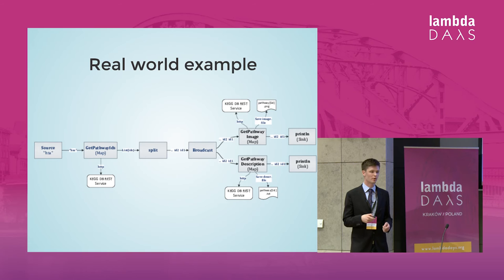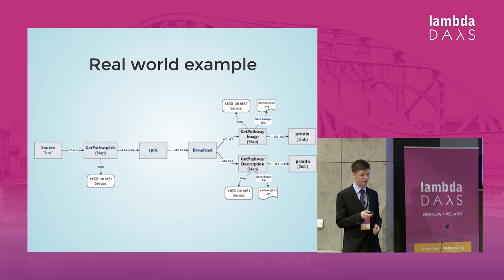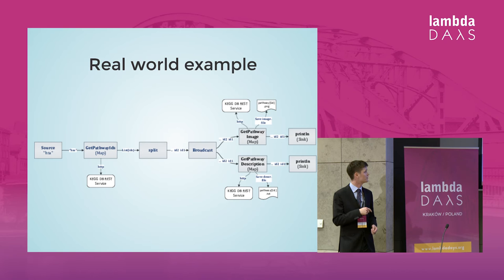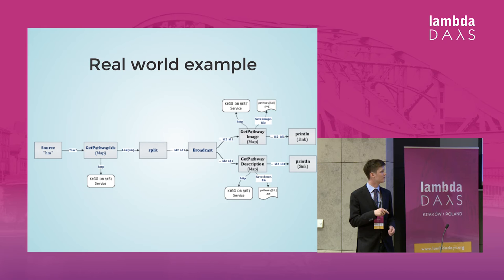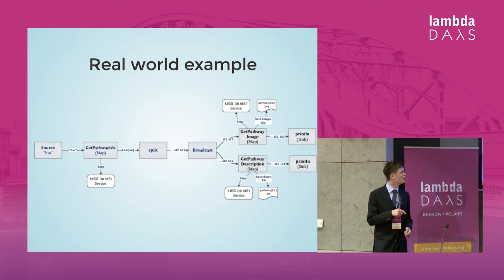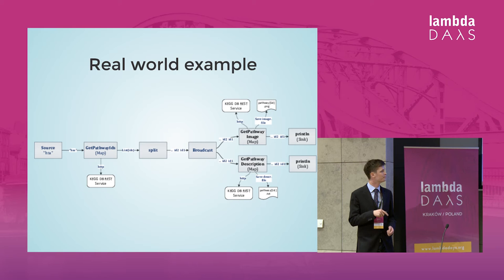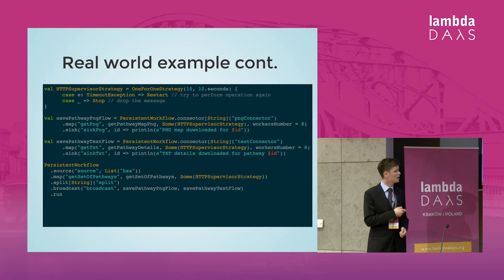And a real-world example. This workflow downloads some biological pathways related to a particular gene identifier. On the input we have a gene identifier. We download the biological pathway identifiers connected to it, then split these into separate messages. We are broadcasting these messages to separate branches of the flow — one branch downloading the graphical representation of the biological pathway, and concurrently another branch downloading the textual representation of the pathway.